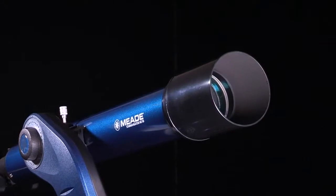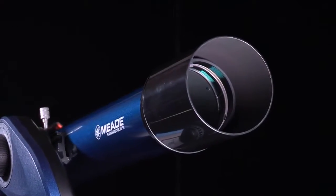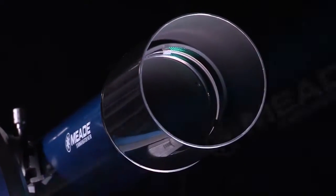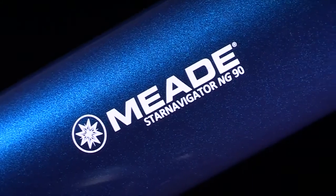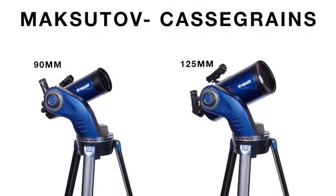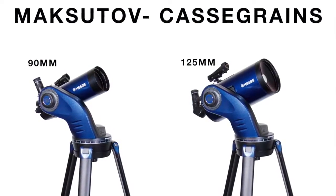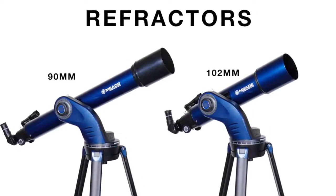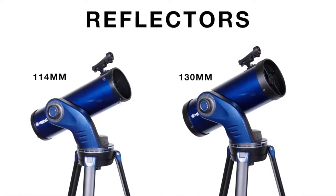First, let's go over what accessories are included with the Star Navigator NG and what apertures are available. The Star Navigator NG comes in six different sizes: a 90mm and 125mm Maksutov-Cassegrain, a 90mm and 102mm refractor, and a 114mm and 130mm reflector.